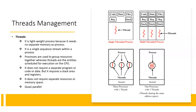Threads are a lightweight process because they need no separate memory, as discussed. It is a single sequence within a process, and all threads are executed sequentially. Processes are used to group resources together. A thread is an entity scheduled for execution on the CPU. The CPU executes the threads. Threads do not require a separate program, code, or data, but they do require a separate stack area and register. Threads do not require separate resources or separate memory allocation.